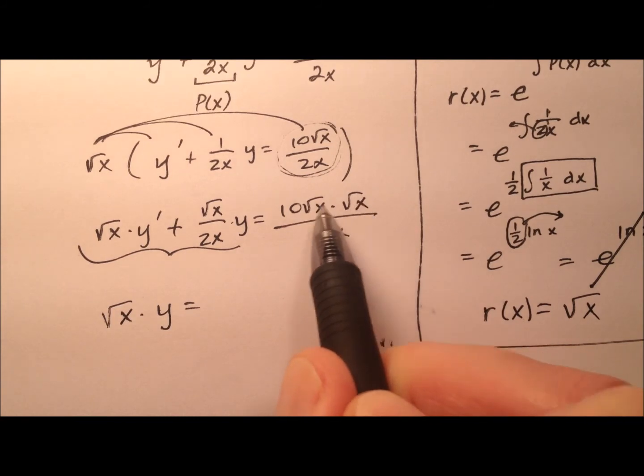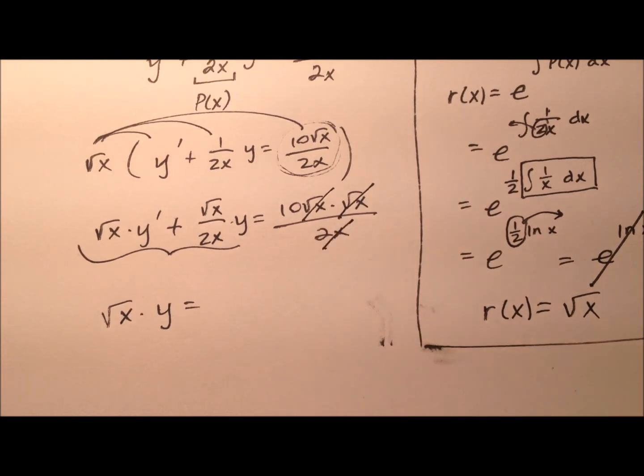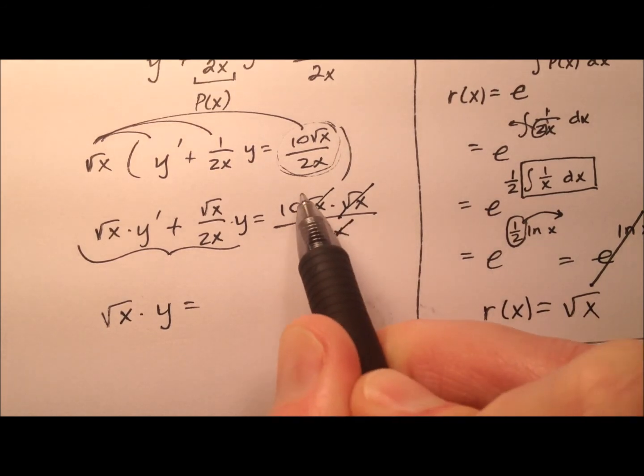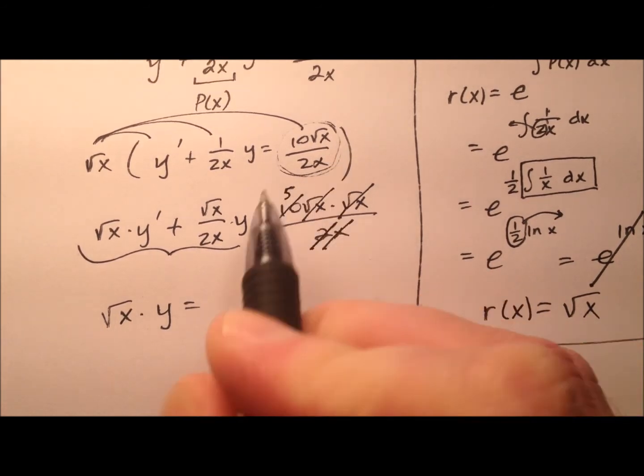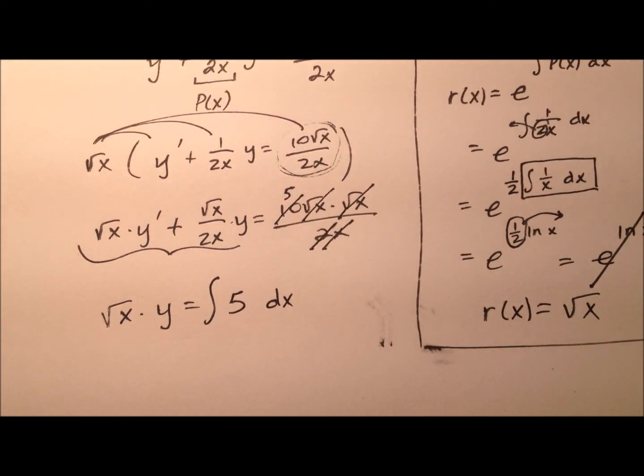Let's go ahead and simplify this right side down. The square root of x and square root of x multiplied together cancel out with this x, and then 10 divided by 2 is just 5. So we'll integrate that with respect to x.